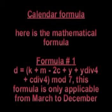Close quantity modulo 7, where div equals integral division and mod equals the remainder. This formula is only applicable from March to December.